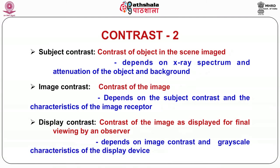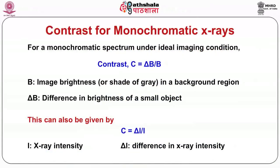Image contrast depends on the subject contrast and the characteristic of the image receptor, that is the detector. The contrast of the image as displayed for final viewing by an observer is display contrast, which depends on image contrast and the gray scale characteristic of the display device. For a monochromatic spectrum under ideal imaging conditions, contrast C is equal to the ratio of delta B upon B, where B is image brightness or shade of gray in a background region and delta B is the difference in brightness of a small object. This can also be given as C equals delta I by I, where I is X-ray intensity and delta I is the difference in X-ray intensity.